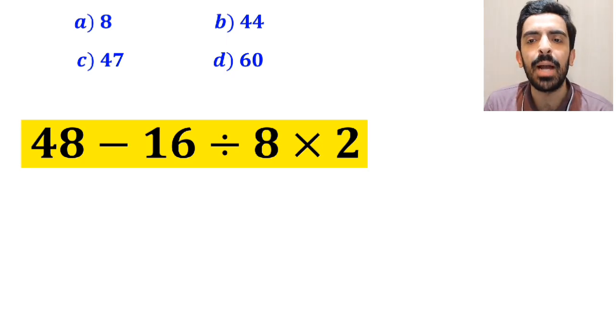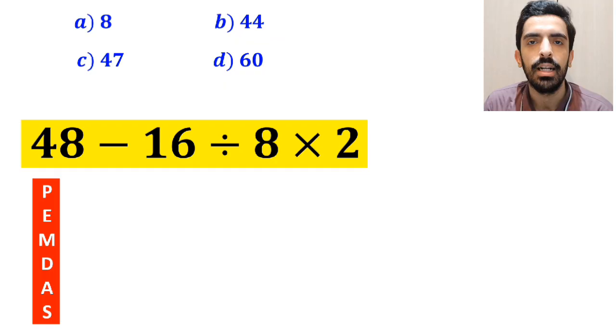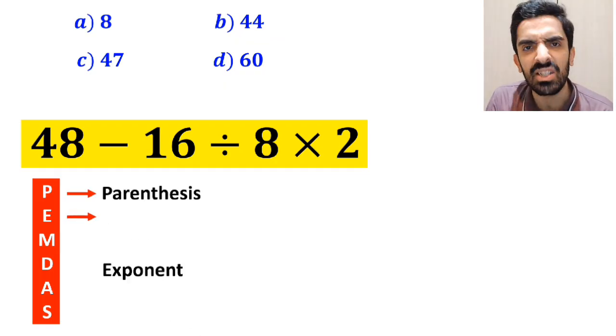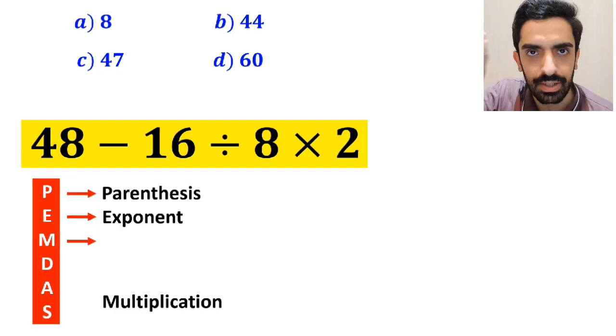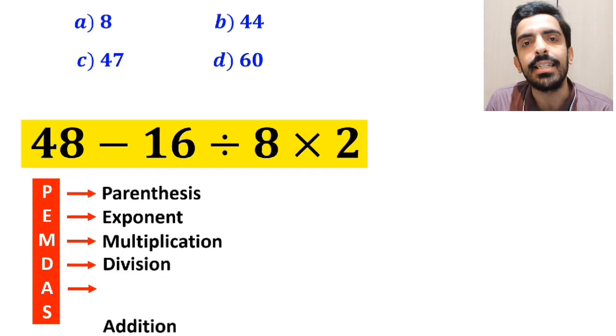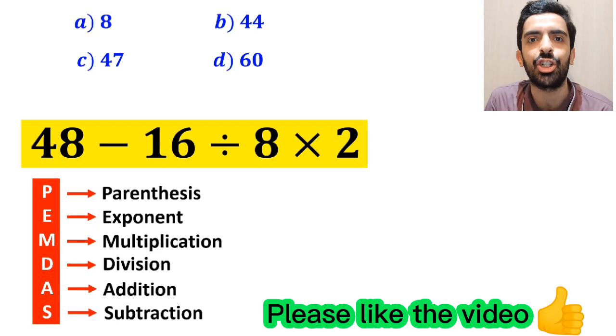To solve this problem, we must follow a rule that is called PEMDAS. And in this rule, P stands for parentheses, E stands for exponent, M stands for multiplication, D stands for division, A stands for addition, and S stands for subtraction.